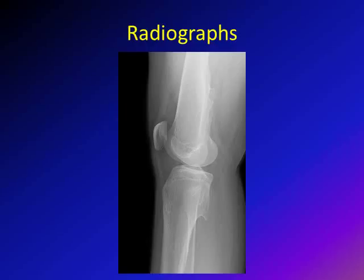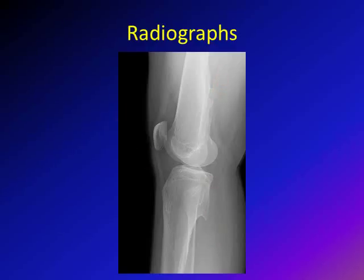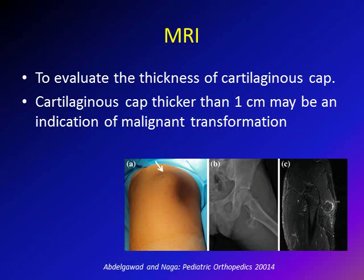This is a lateral x-ray of the knee for a child with multiple osteochondromatosis showing multiple osteochondromas. Remember, the lesion can be sessile or pedunculated, and in both the medulla and cortex of the lesion are continuous with those of the bone. Osteochondromas classically point away from the joint. MRI is used to evaluate the thickness of the cartilaginous cap when malignant transformation is suspected; a cap larger than one centimeter may indicate malignant transformation.